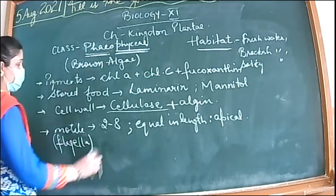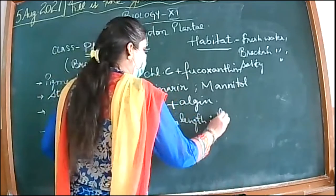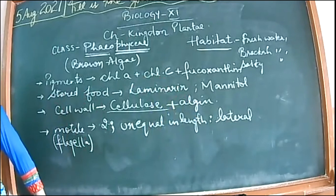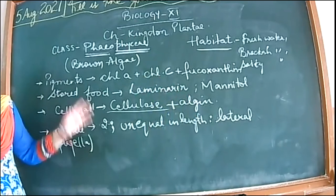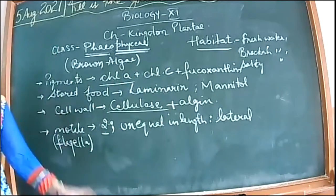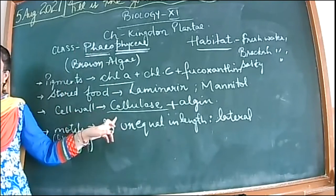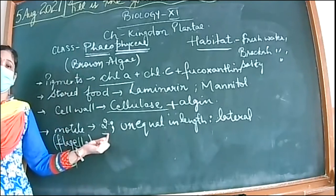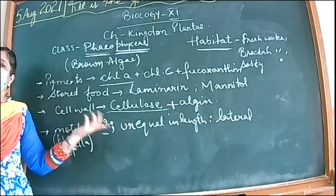The cell wall is made of cellulose along with algin. These are provided with all the different characters, which is why they have been provided a separate class and name. This is classification. Coming to the flagellar count, if present, they are two in number, not varying. They are two in number but unequal in length, and their position is not apical but lateral. Chlorophyll A is the same, two flagellar count is common, otherwise the number varies in Chlorophyceae, but here in Phaeophyceae there are only two.